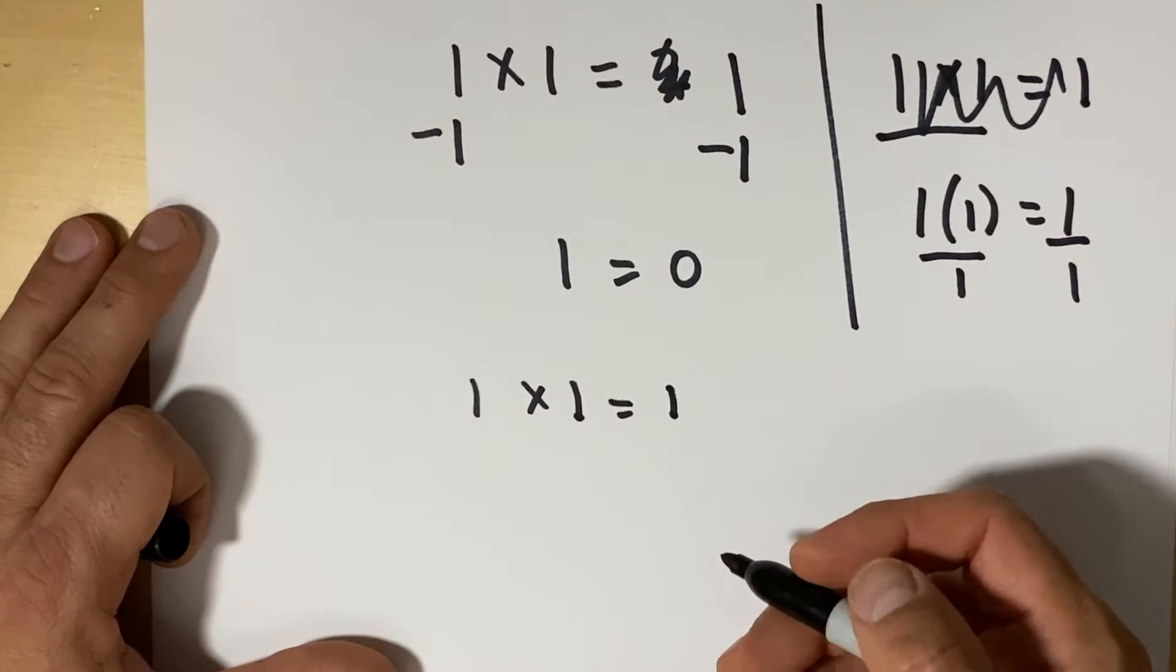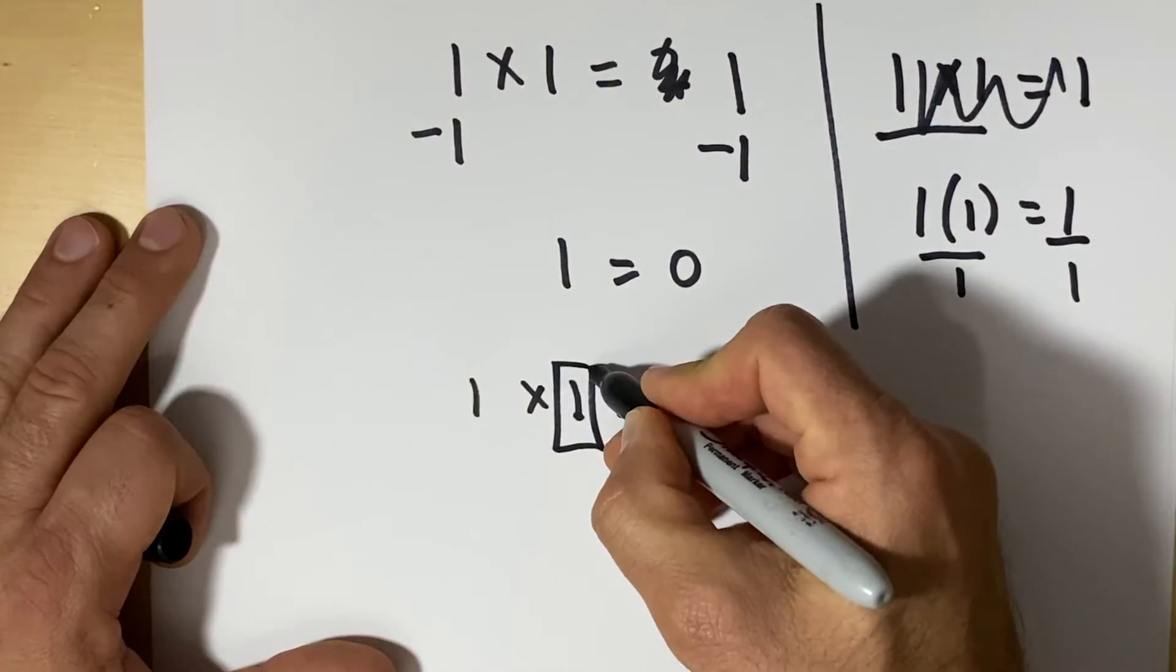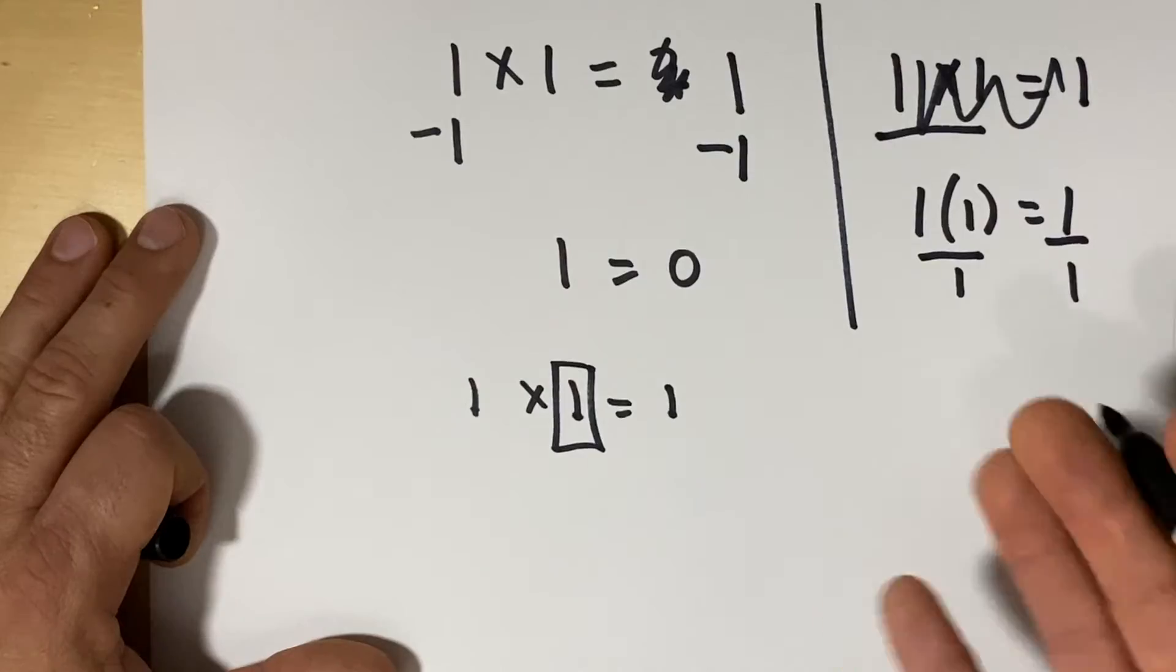The definition of multiplication is that you're multiplying some amount a certain number of times. So only one of these is referring to the amount.